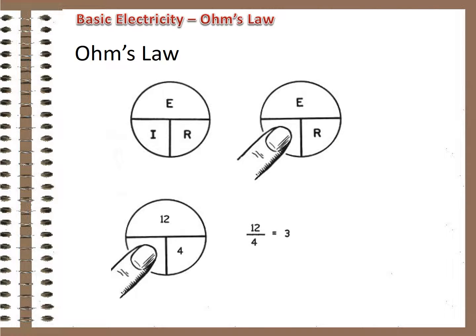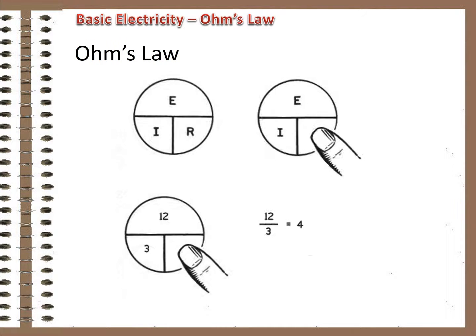Need to know current? Cover the I. The horizontal line tells us to divide the voltage by the resistance. If we knew our circuit had a 12 volt source and a 4 ohm resistor, Ohm's Law tells us that 3 amps of current will flow. Need to know resistance? Cover the R — you must divide the voltage by the current. If we knew our circuit had a 12 volt source and 3 amps of current, Ohm's Law tells us that the circuit has 4 ohms of resistance.